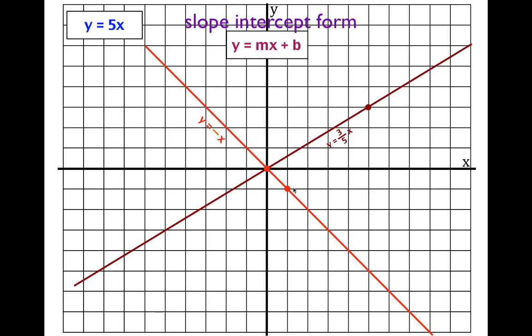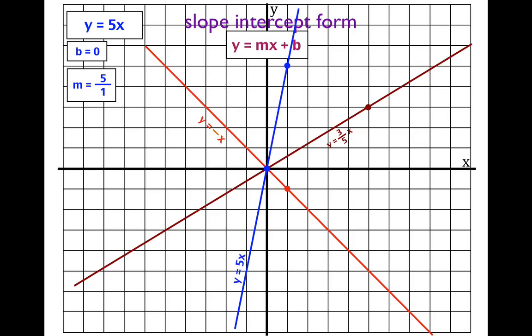This is y equals 5x. Once again, the y-intercept is zero. The slope is five, or five over one as a fraction — rise over run. Put a dot at the origin for the y-intercept, then go up five and over one to the right. That gives the second point, and we draw the line through those points. That is the line y equals 5x. All three of these lines had a y-intercept of zero, which you know because there's no number after the x.